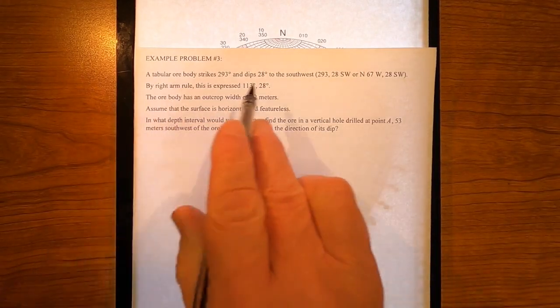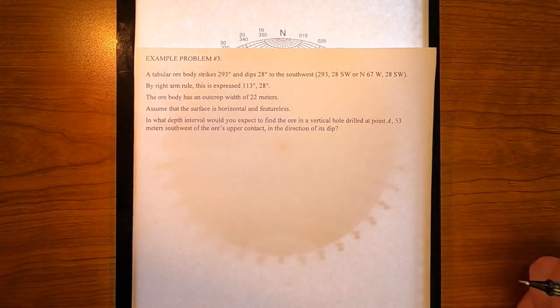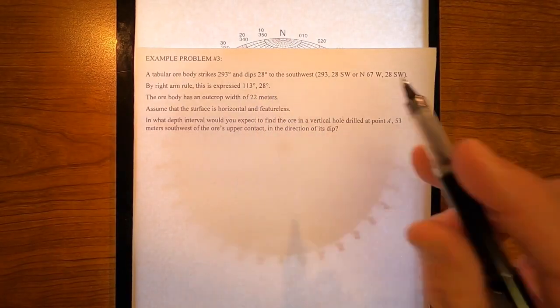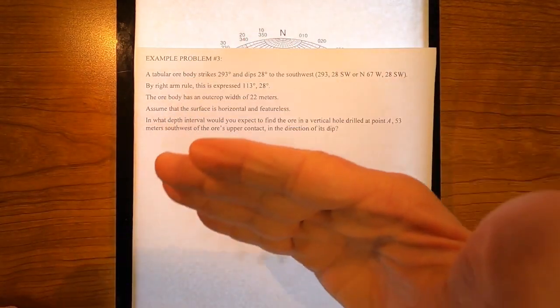This is the problem where we have an ore body. We're given the strike, 293, it dips 28 to the southwest. That would be over here.